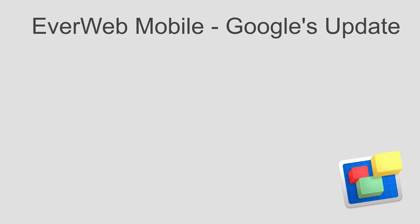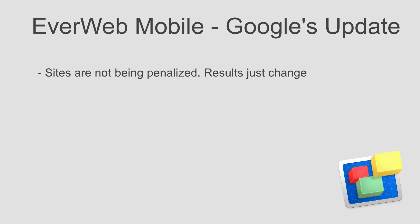First, let's talk about how the change will affect you. A lot of people may think that they are being penalized in the rankings. This is not the case. Google is not penalizing any website, but rather making a change to the results. This doesn't mean that all websites appearing in the search results on a mobile device will be a mobile site. If Google deems necessary, it will still display desktop sites in the results.